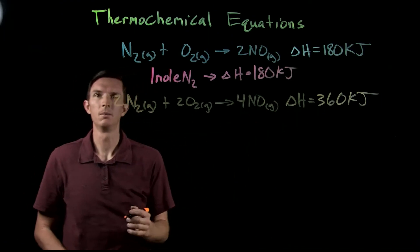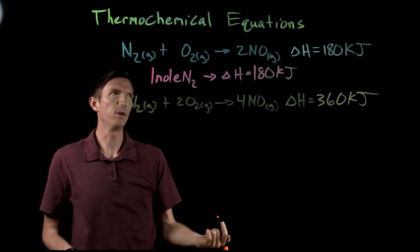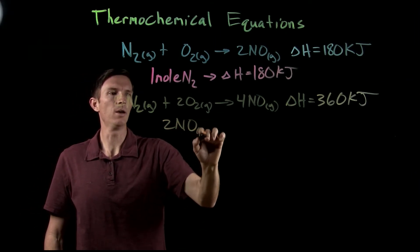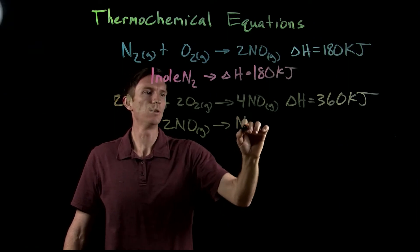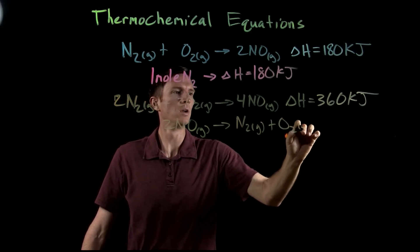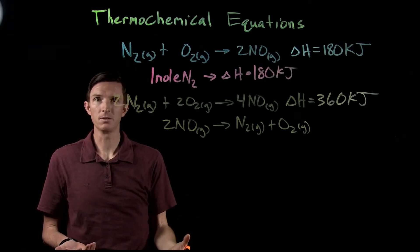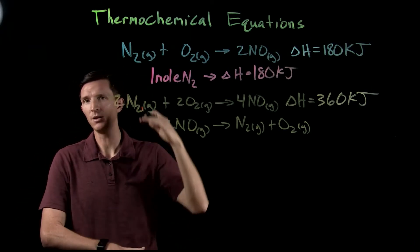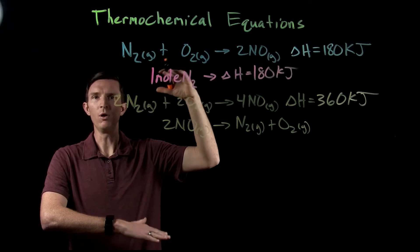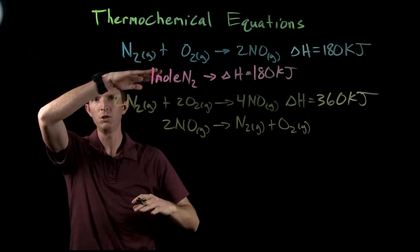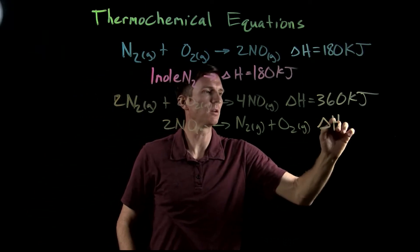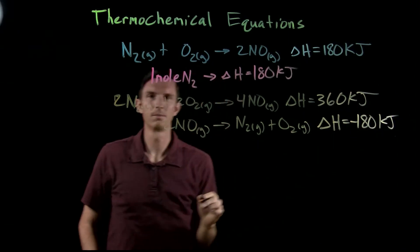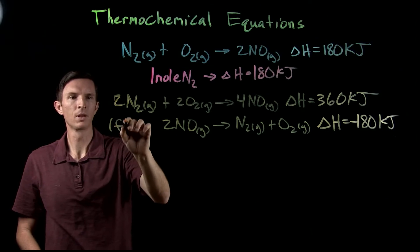What if we took the reverse of the reaction? If we flip it so that two NO goes to N₂ plus O₂, we have the opposite happening. Remember, enthalpy is a state function — it doesn't depend on the path, but on the starting and finishing points. If we flip those starting and finishing points, we get the opposite change, so the enthalpy would be negative 180 kilojoules.